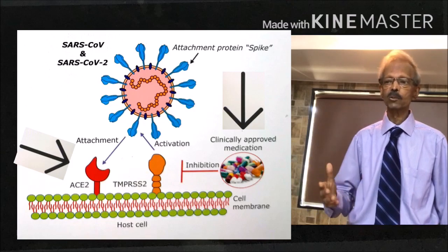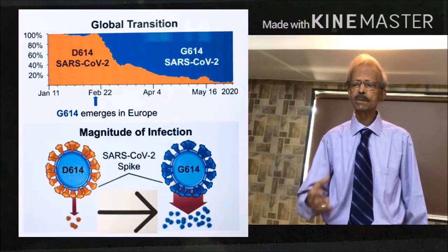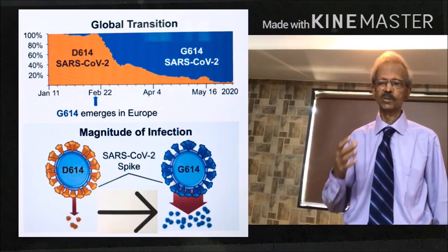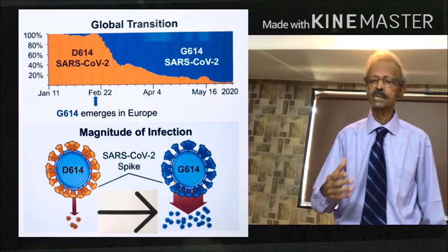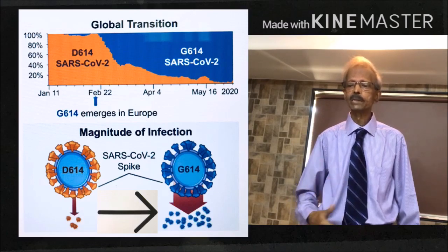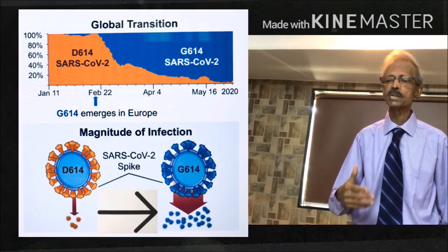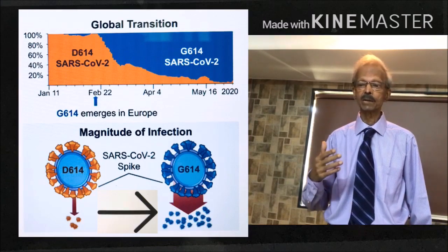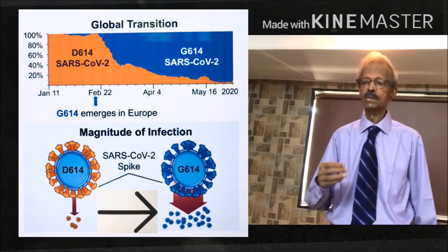Probably to counteract all these drug mechanisms, the virus mutated from the earlier D614 form, which was more toxic, to the comparatively less toxic G614. From the figure on the left hand side, you will get the idea that by this mutation, transmission ability of novel coronavirus has increased to a great extent.